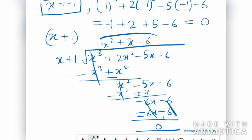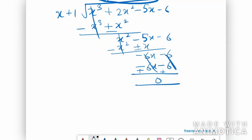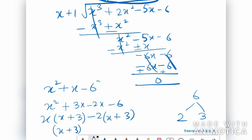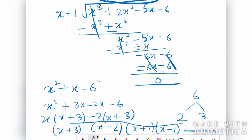Now we need to factorize x² + x − 6. We split the middle term using factors of 6: it becomes x² + 3x − 2x − 6. Taking x common from the first two terms and −2 common from the last two terms gives (x + 3)(x − 2). So our four factors are (x − 1), (x + 1), (x + 3), and (x − 2).